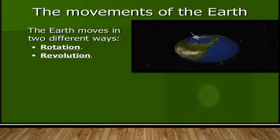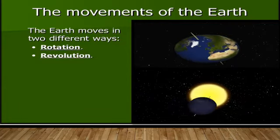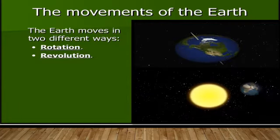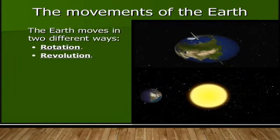One is spinning around its axis and second is moving around the sun. So Earth has two types of movement: rotation and revolution.